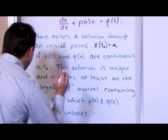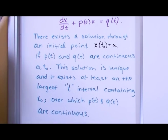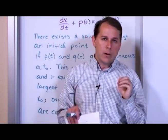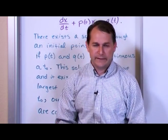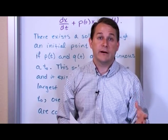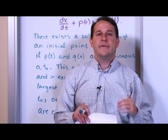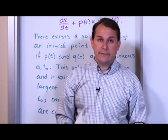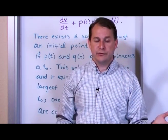You can see why the existence and uniqueness theorem is such a bear to understand, because even writing it down takes a whole board. You really struggle a lot of times understanding what it's really saying. But the punchline is: differential equations have a solution, and if it's a well-behaved equation, it has one and only one solution — that's unique. It doesn't have a million different solutions.